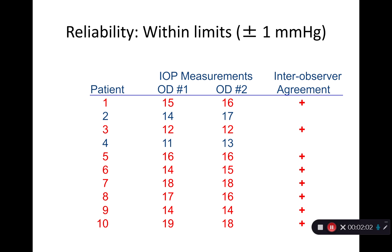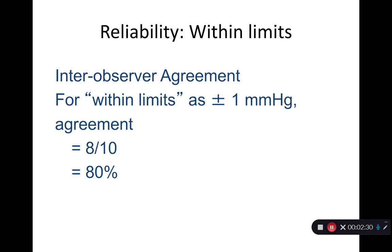Let's think about it within limits. Within limits means it's over a range of measurements — in this case, plus or minus one millimeter. In example one, the first optometrist got 15, the second optometrist got 16. That's within one millimeter of mercury, so they agreed in this situation. Once we apply that within-range criterion, we discover the two doctors are about 80% within agreement — eight out of ten, so that's 80% agreement.